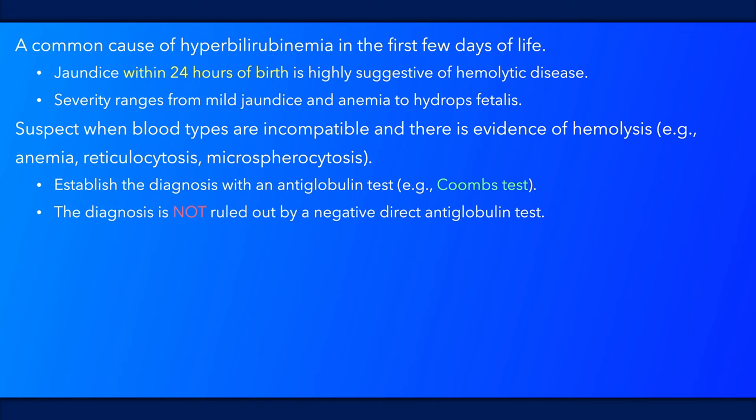Hemolytic disease of the newborn is not ruled out by a negative direct antiglobulin test. If the direct antiglobulin test is negative, then an indirect antiglobulin test should be performed. It is also important to be aware that the direct antiglobulin test is typically more strongly positive in cases of rhesus isoimmunization than in cases of ABO incompatibility.